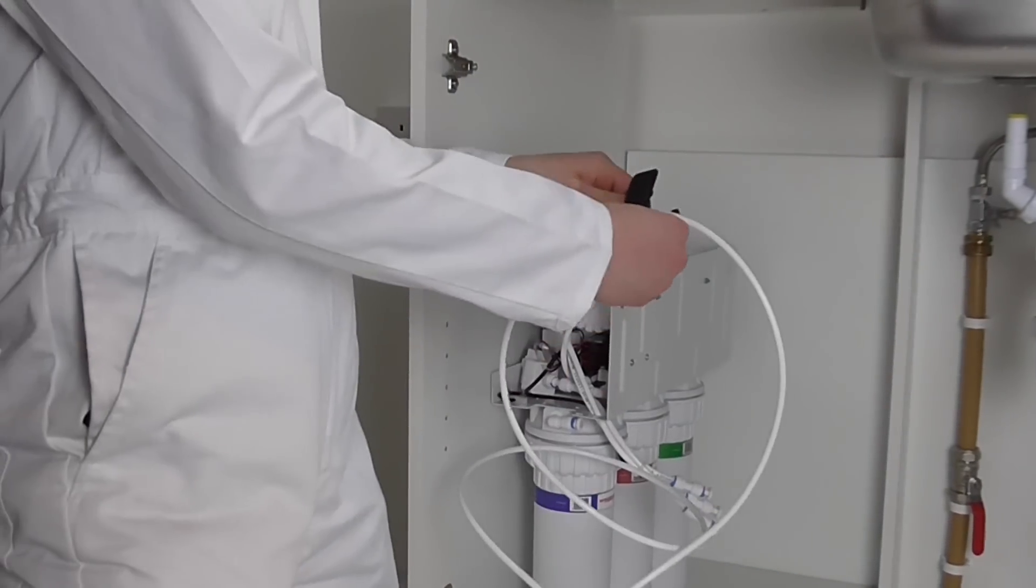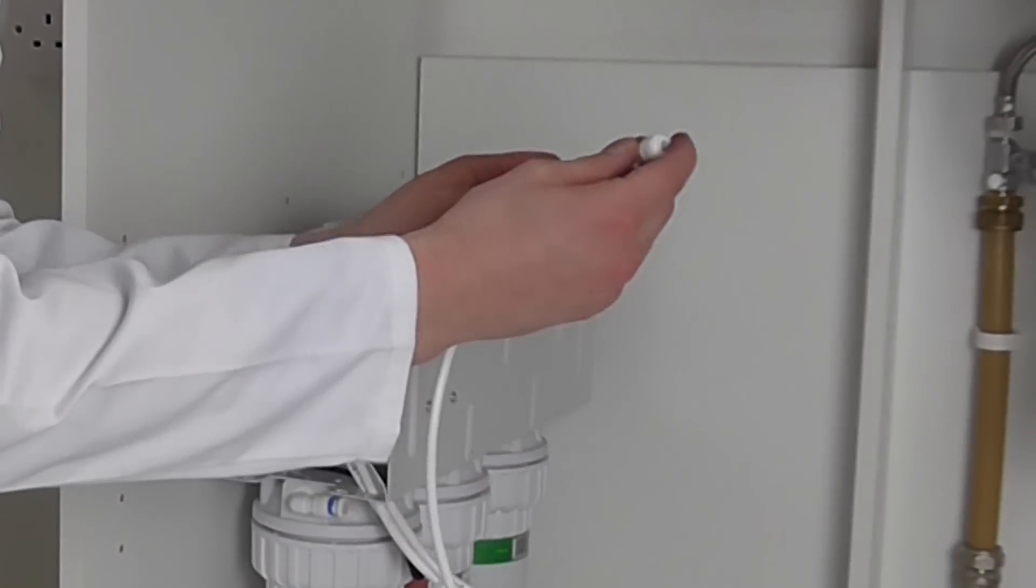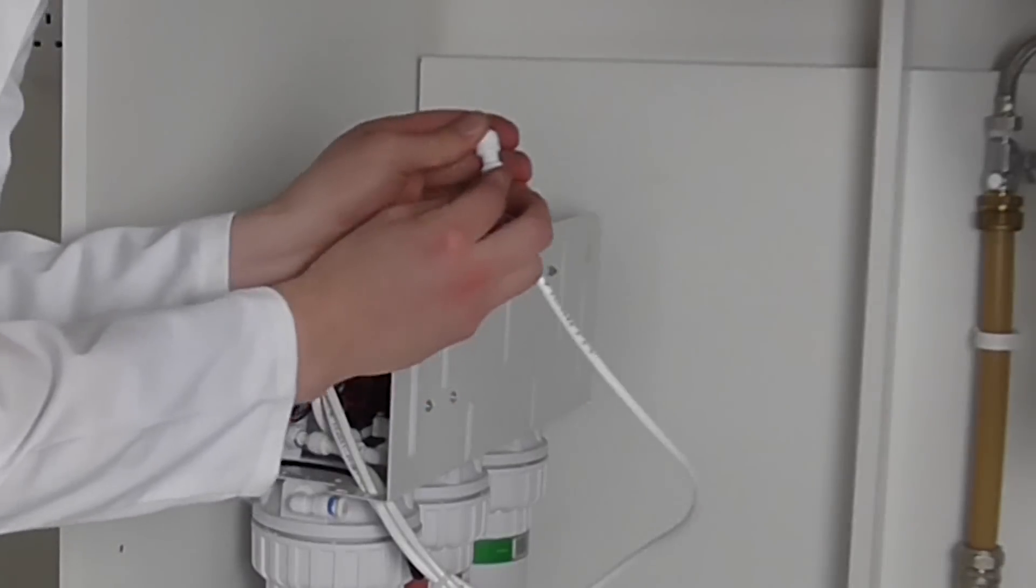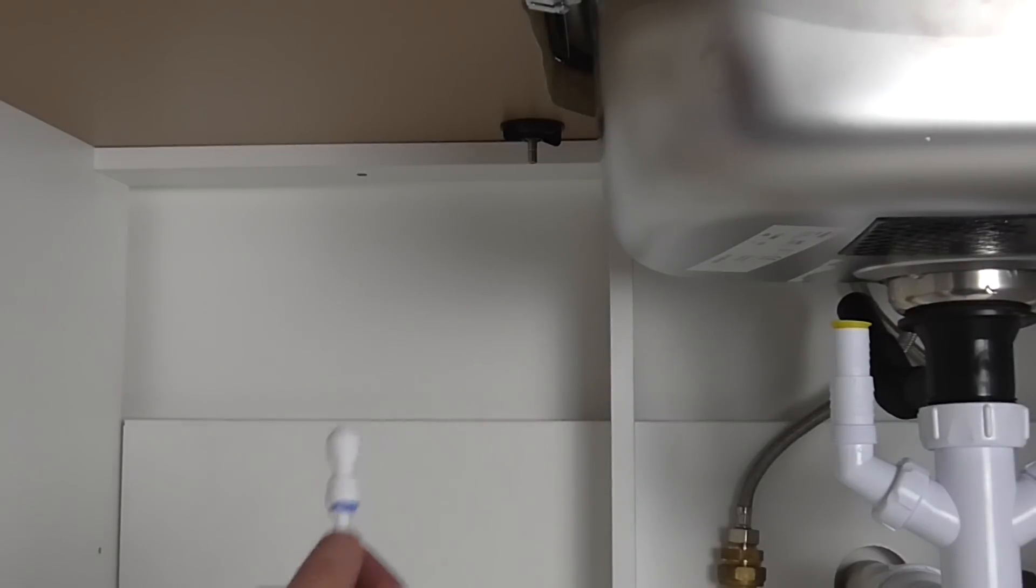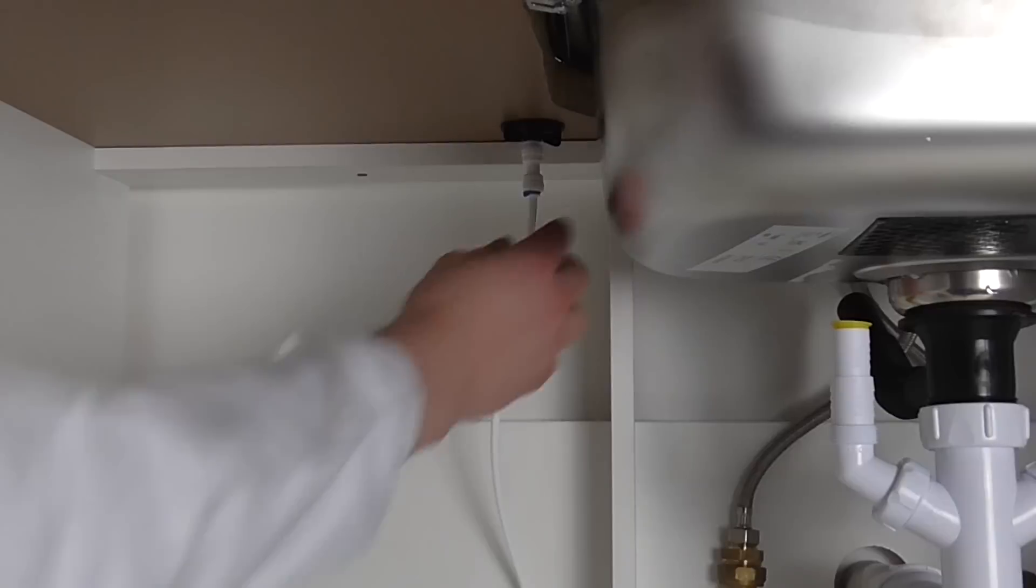Cut a suitable length of tubing and insert the end into the connector. Secure with a blue clip. Push the other end of the connector directly onto the tap stem. Secure with a blue clip.